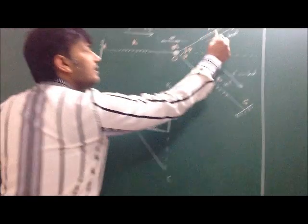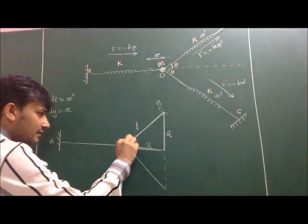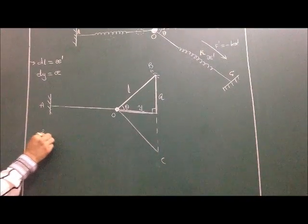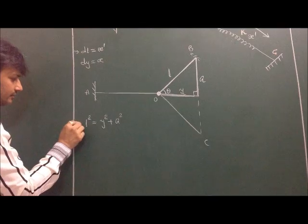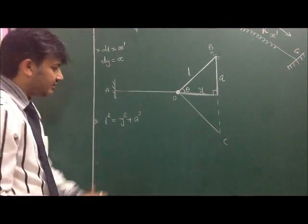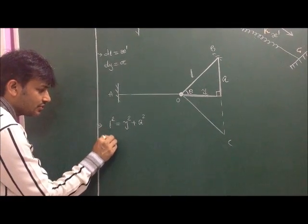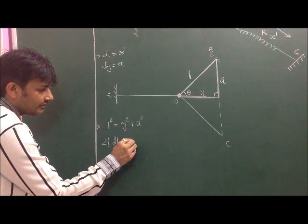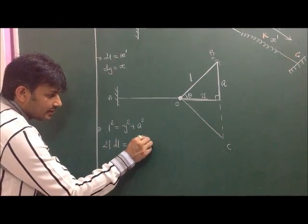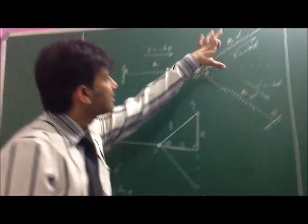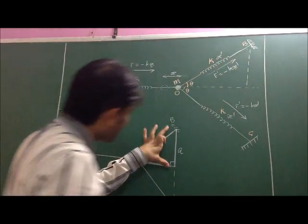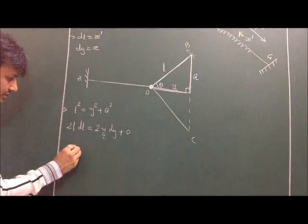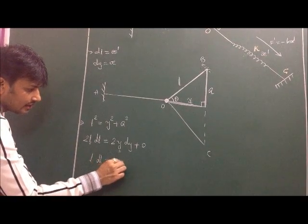We want to obtain the relation between x-dash and x. This angle is theta and there is a right angle here. Applying Pythagoras: l squared equals y squared plus a squared. I differentiate this with respect to a variable. Differentiation of l squared gives 2l·dl, differentiation of y squared gives 2y·dy, and differentiation of a squared is zero since a is constant. Dividing by 2 gives l·dl equals y·dy.